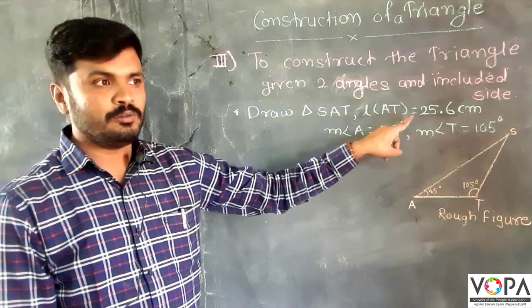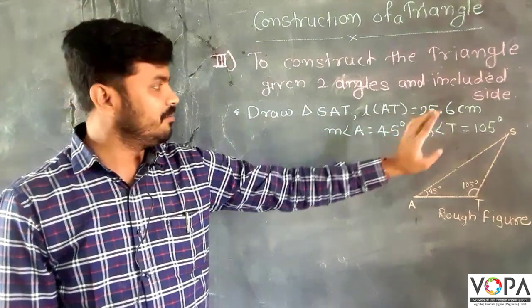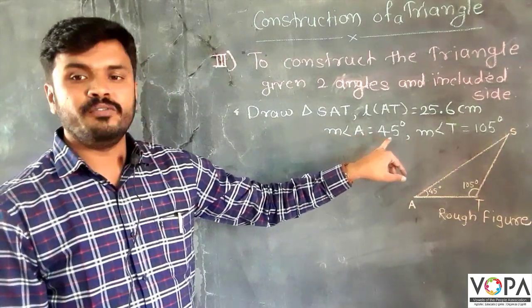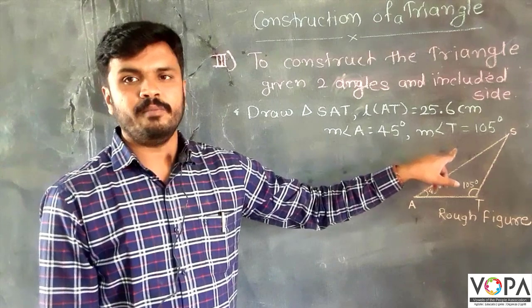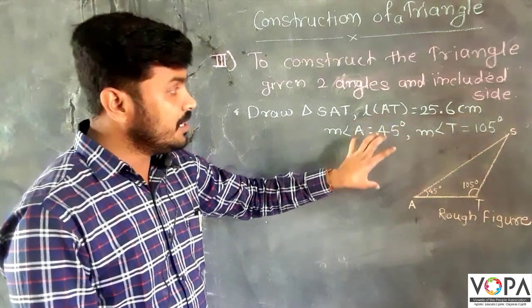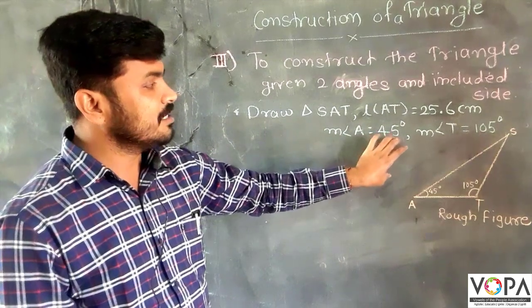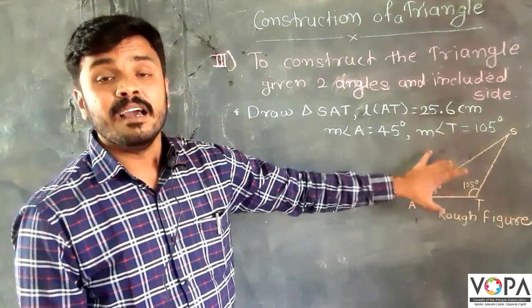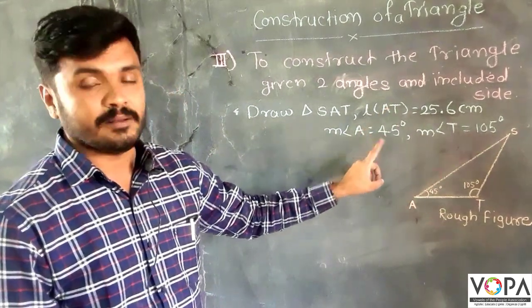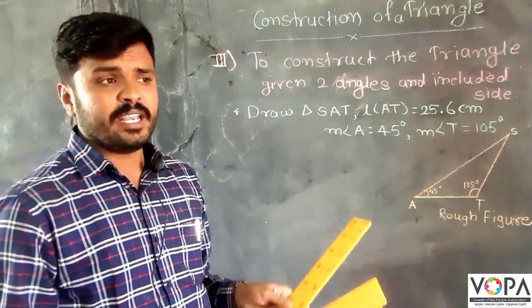The length of AT is equal to 25.6 centimeters. The measurement of angle A is equal to 45 degrees, and the measurement of angle T is equal to 105 degrees. With these measurements, we know this is an obtuse angle triangle. This is the rough figure of this data.